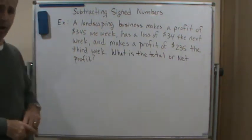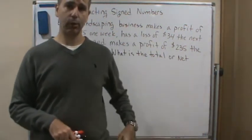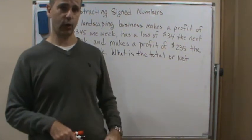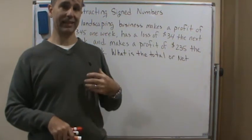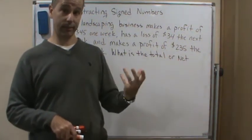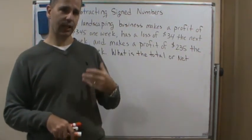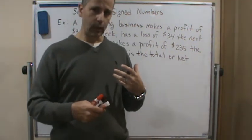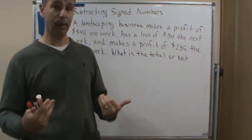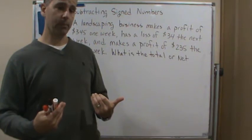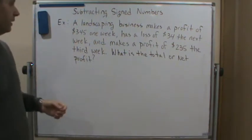In this problem we're talking about a landscaping company and profit. Profit is money that comes in — think about cash in your pocket — so that would be positive, a positive cash flow. A loss means money was going out, out of pocket, so that would be negative. For example, costs like paying workers their hourly wage could result in a loss.